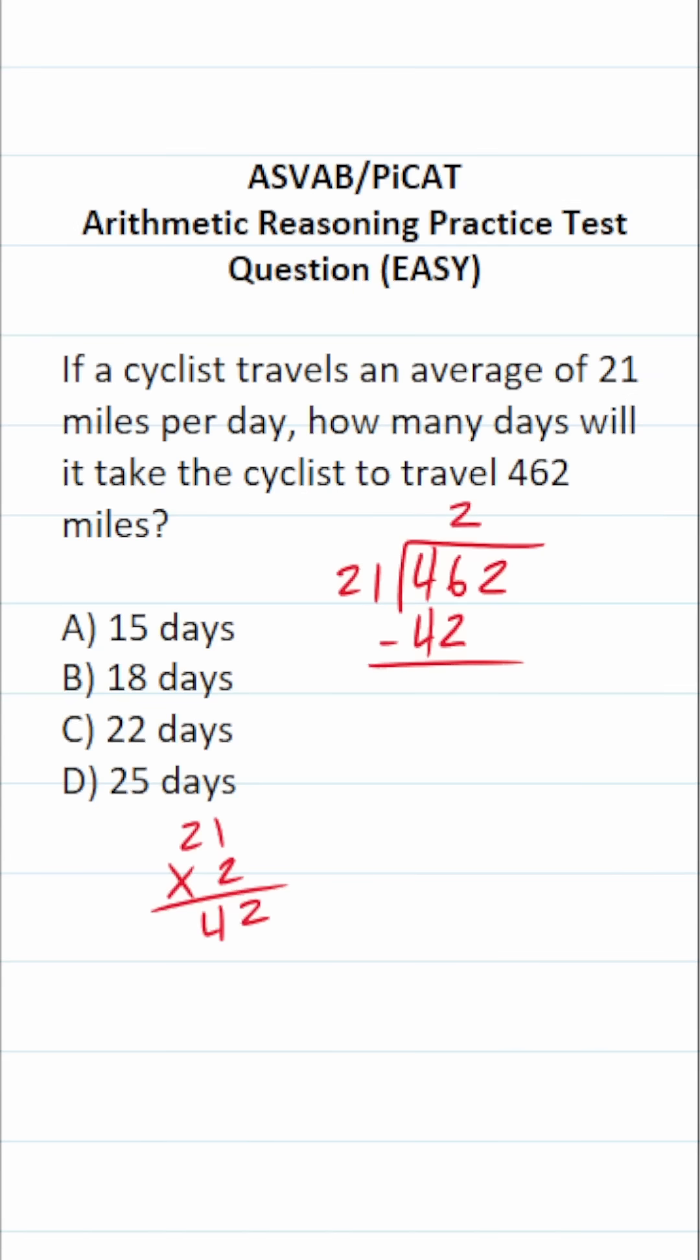All right, so 46 minus 42 is going to be 4. Drop down this 2. Again, we just determined that 21 times 2 is exactly 42 with no remainder.